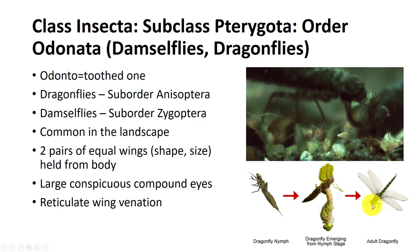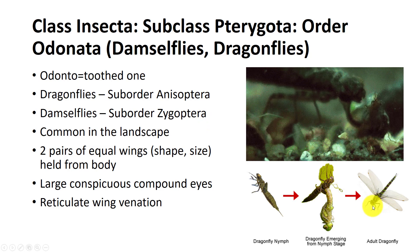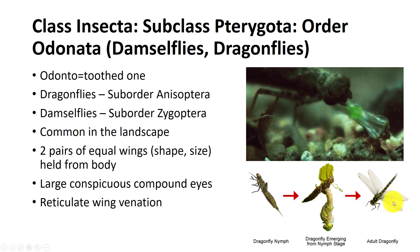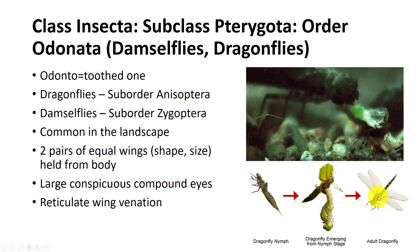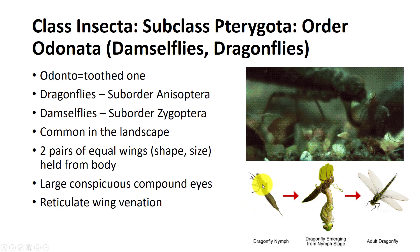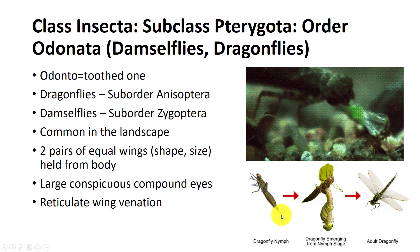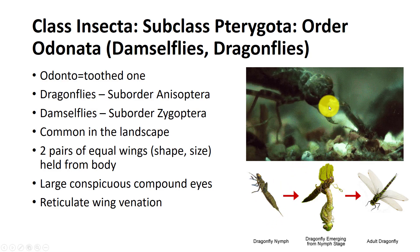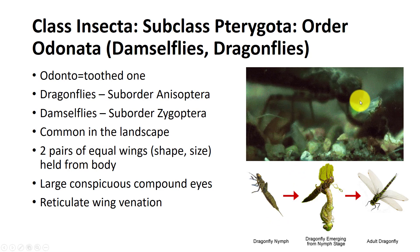Minute antennae, extremely large eyes filling most of the head, two pairs of transparent membranous wings with many small veins, a long slender abdomen, an aquatic larval or nymphal stage with posterior tracheal gills, and a prehensile labium, which is extendable jaws underneath the head.